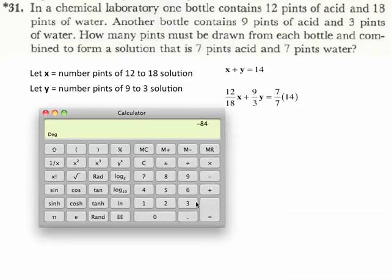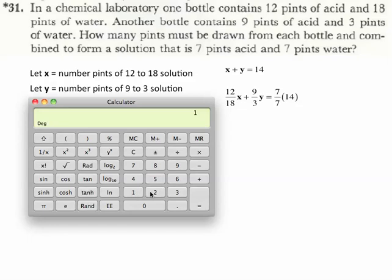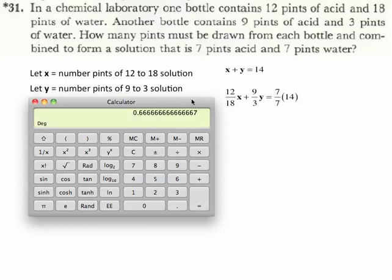Which is like 66.7%, right? So 12 to 18 is 66.6 repeating, or 66.66667%.